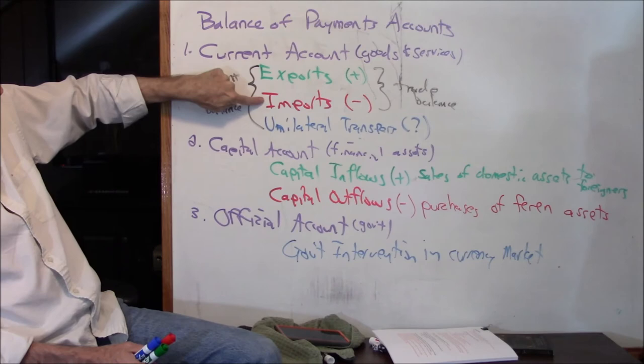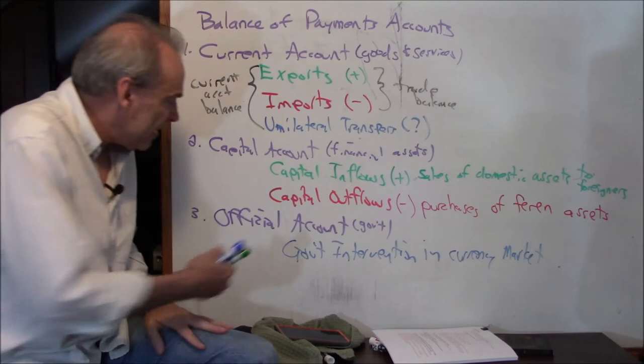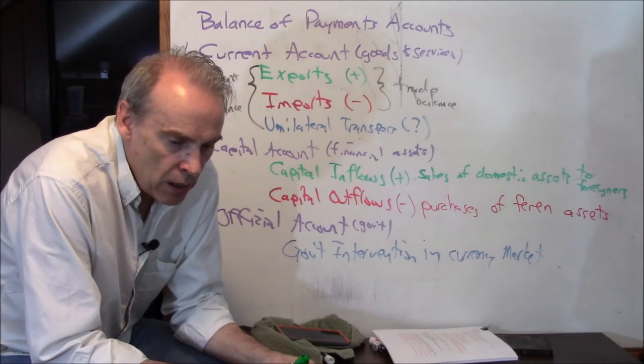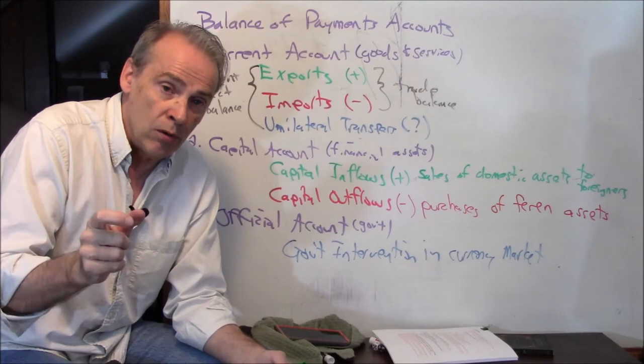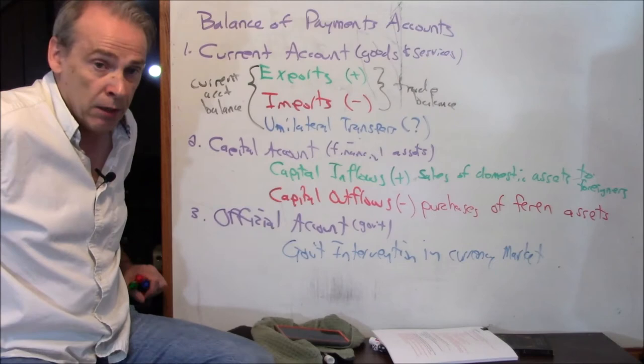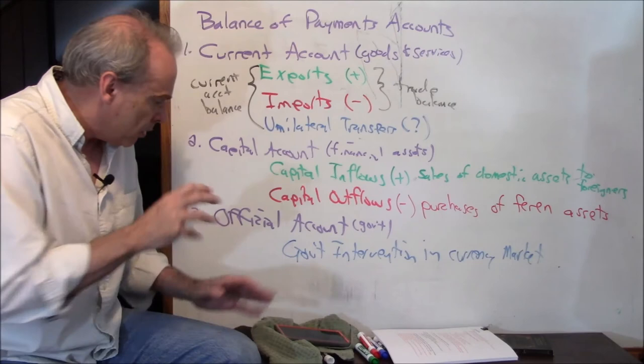And if the government intervenes in the currency market — which they do on occasion — you can look it up. I believe it's the Federal Reserve Bank of New York that has a section in their monthly periodical saying what did the Treasury and the Fed do in the currency market last month, and very often it says nothing — they just let the currency prices go wherever they wanted. Let me erase most of this and give you a summary.